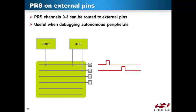The PRS output on some channels can be routed to external pins. This allows PRS to trigger external devices. Routing a PRS signal to an external pin can also be a useful tool when debugging peripherals that operate while the CPU is asleep. This example shows two PRS channels configured. The first channel is used by the timer to trigger the A-to-D converter and the second channel is used by the A-to-D converter to signal when the conversion is done. By routing the output of these two channels to external pins, you can connect a measurement instrument and measure the delay from when a sample is triggered to when a sample is done.